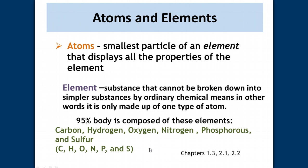We talked about an atom — it's the smallest particle of an element that displays all the properties of that element. What is an element? It's a substance that cannot be broken down into simpler substances. You've heard of a periodic table — it lists both naturally occurring and man-made elements with their characteristics, and every element on that periodic table is made up of one type of atom.